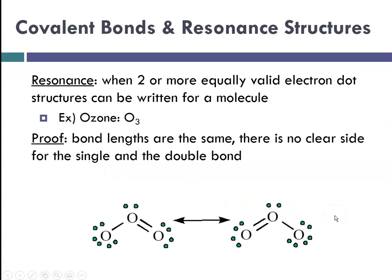And so again, that would be called a resonance structure. So here in ozone, we say that these two bonds are just kind of flipping back and forth between the two, and that is resonance. And the proof is that the bond lengths are the same.